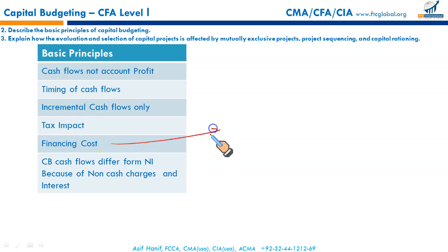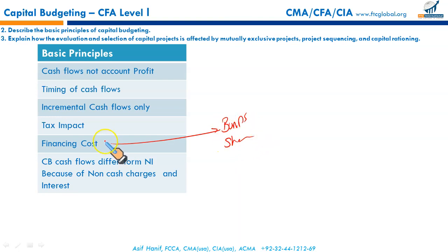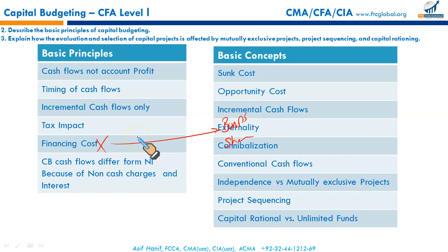Finance cost — whether money came by issuing bonds or shares — is ignored in cash flows. Why? Because the cost of funds is embedded in the rate we use to discount the projects. When we use a certain discount rate, the financing cost is already embedded in it, so we don't need to take it separately.